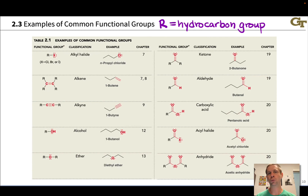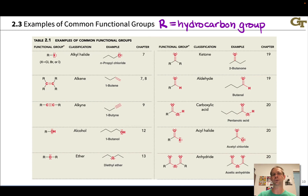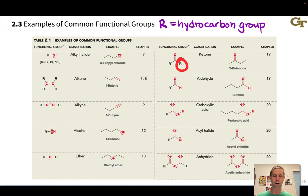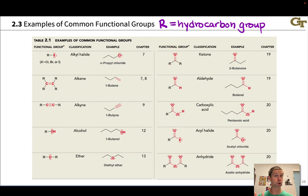This slide shows table 2.1 from the Klein third edition text — a survey of some common functional groups. The symbol R that you'll see in organic molecules, especially when first encountering structures and reactions, is a general symbol representing a saturated hydrocarbon group, though it could contain double or triple bonds. A heteroatom is not what's connected to the functional group. For example, in the ketone, these R's represent carbons with connected hydrogens and maybe other carbons, and the functional group is the C=O double bond — the carbonyl group — connected to two carbon groups.